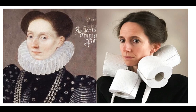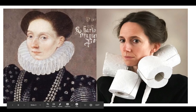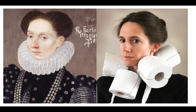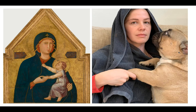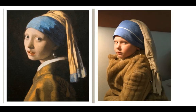In the first example, she's wearing a black top and uses toilet paper as big ruffles around her neck. It doesn't look exactly the same, but I'm not looking for it to be perfect — I'm looking for your interpretation. In another, a woman uses a towel instead of a cloak and holds her puppy instead of a baby — super cute. Then there's a really good Girl with a Pearl Earring recreation with a pearl earring, blue headband, beige scarf, and beige jacket — she really nailed the facial expression too.